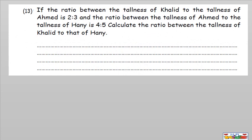Question number thirteen: if the ratio between the tallness of Khaled and Ahmed is 2 to 3, and the ratio between the tallness of Ahmed to Hani is 4 to 5. So we have Khaled, Ahmed, and Hani — Khaled to Ahmed is 2:3, Ahmed to Hani is 4:5. They are not given directly together — we must write them on two lines and work to find the combined ratio. Students are asked to find the ratio Khaled to Ahmed to Hani and write the answer in the comments.